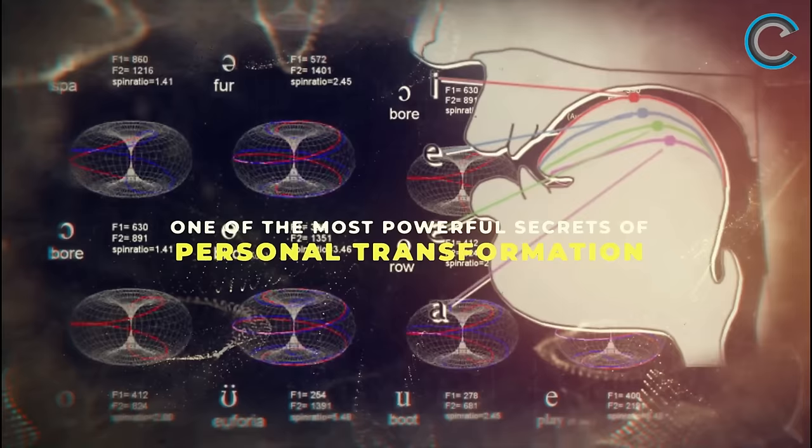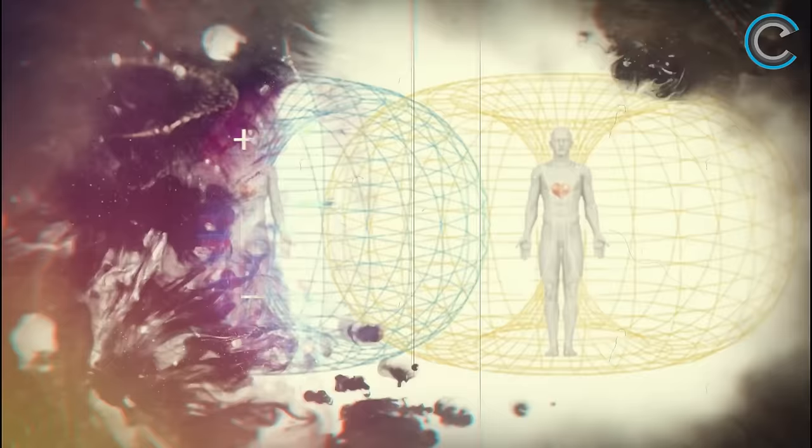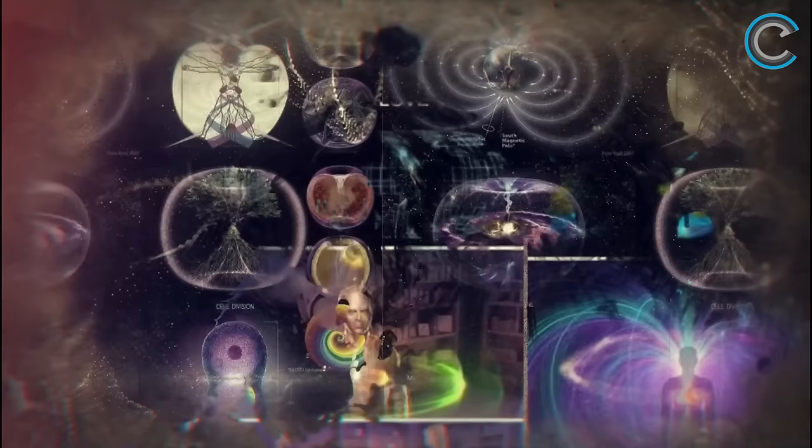What you're about to hear is one of the most powerful secrets of personal transformation. In this video, Michael Tellinger will show you the extraordinary power of toroidal fields to manifest anything you want in life. This is truly powerful and it's all around us. So buckle up and let's get started.